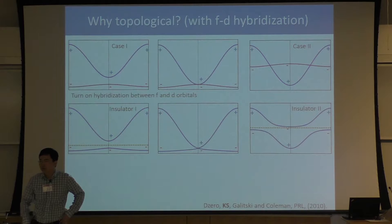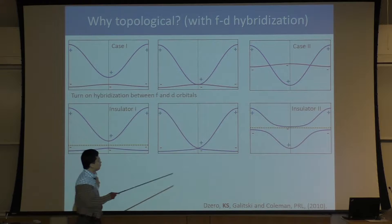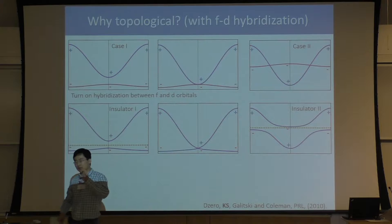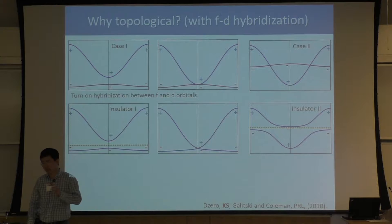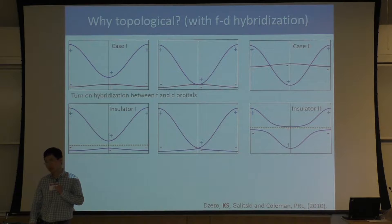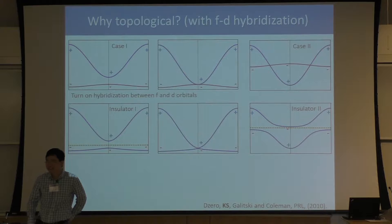Whether you get spin ordering depends on materials. Once Kondo coupling starts to hybridize the localized electron and the conducting electron, the local spin is no longer a good picture because it's really coupled with the conducting electron. But if the coupling is very weak, this local spin could have spin exchange interaction or magnetic dipole interaction, or the conducting electron can introduce RKKY interaction — those could introduce spin ordering. In SMB6, there's no signature of any spin ordering, but in some other heavy fermion compounds, one could tune to a spin ordered phase.